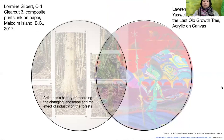Gilbert has a long history of recording the changing landscape and the effect of industry on the forests within her artworks and photography. This piece is no different — it does focus on the effect of the changing landscape. She was specifically looking at how the forests were regrowing despite the clear cutting that had happened long ago.